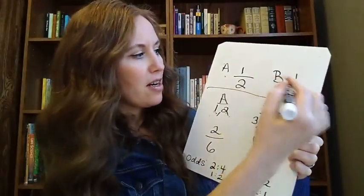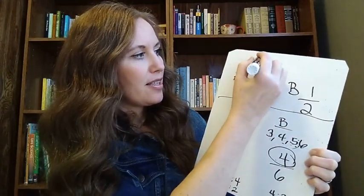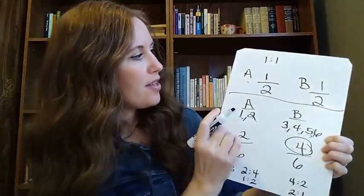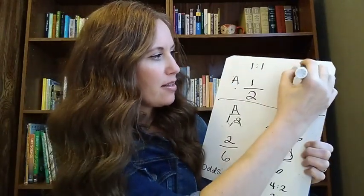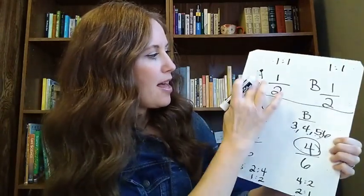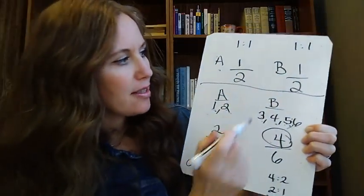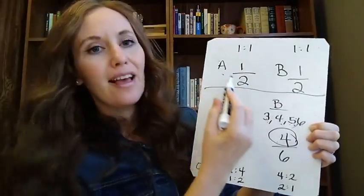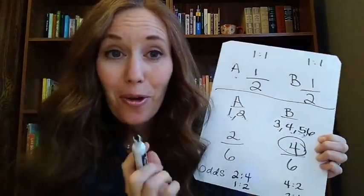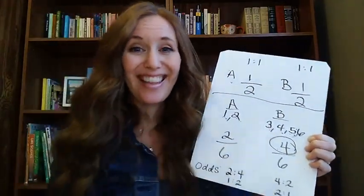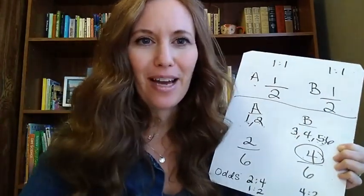Now, up here where it was an even chance, it's one to one. The odds are one to one — we're either going to get heads or tails. One to one for team A, and one to one for team B. Even chances. That's why if I were giving out candy, you'd want me to use the coin, not the dice, to determine who gets it based on these parameters.